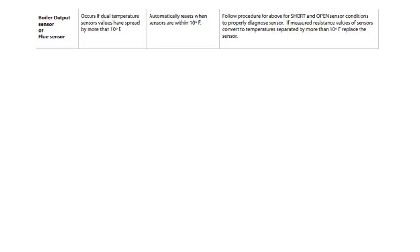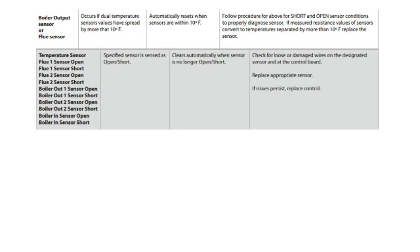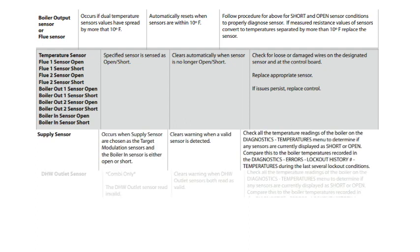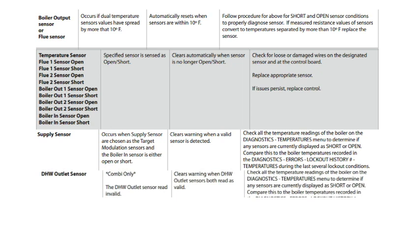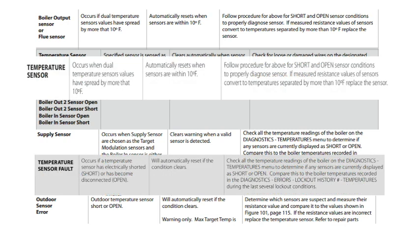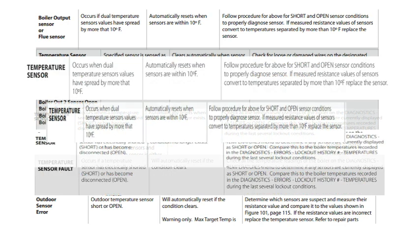There are many different variations of the sensor error fault, as you can see here. We could get a boiler out sensor fault, or it may just say temperature sensor, supply sensor, DHW sensor, outdoor sensor — the list goes on and on. However, the procedure is basically the same for all of them.